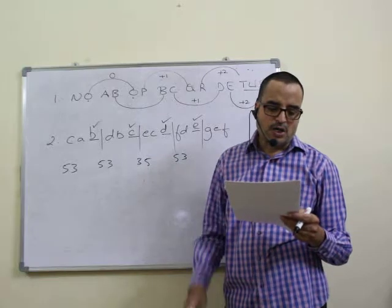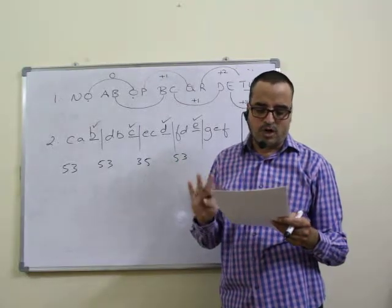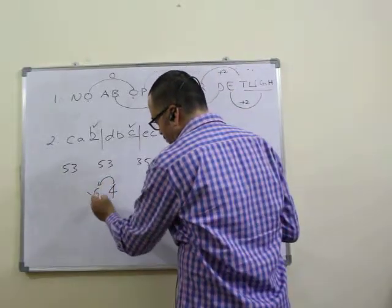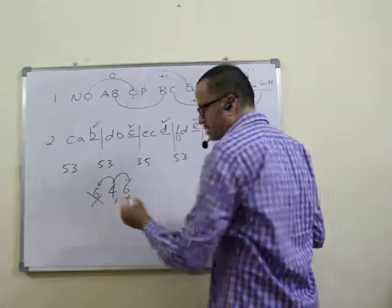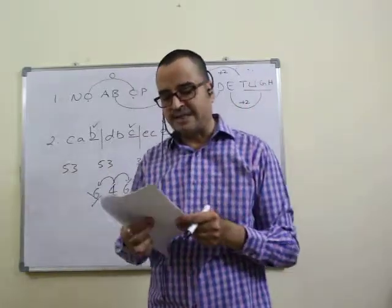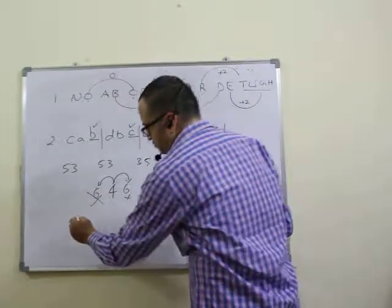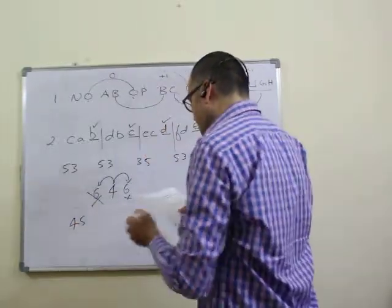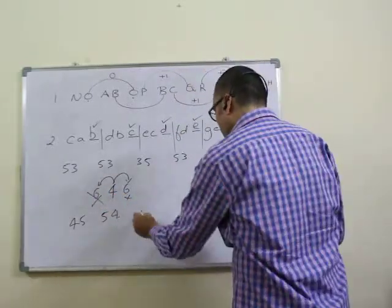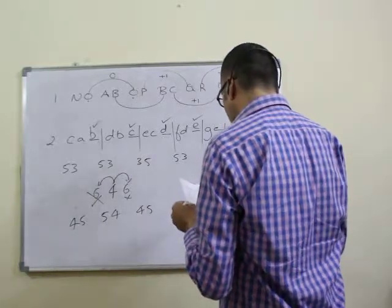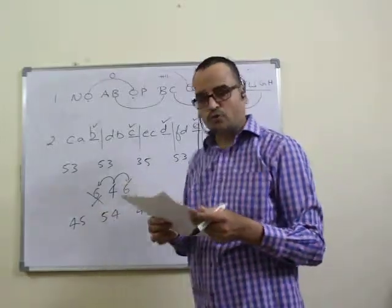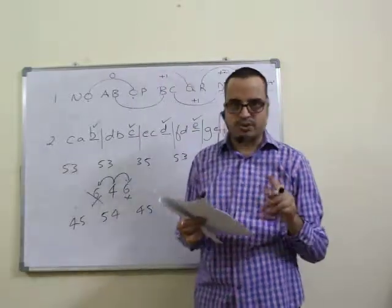Question four: how many fours are neither followed nor preceded by six? We find fours not adjacent to six. Checking: four five — okay; five four — okay; four five again — okay; last is four three. Total four instances. So the fourth question answer is third option.